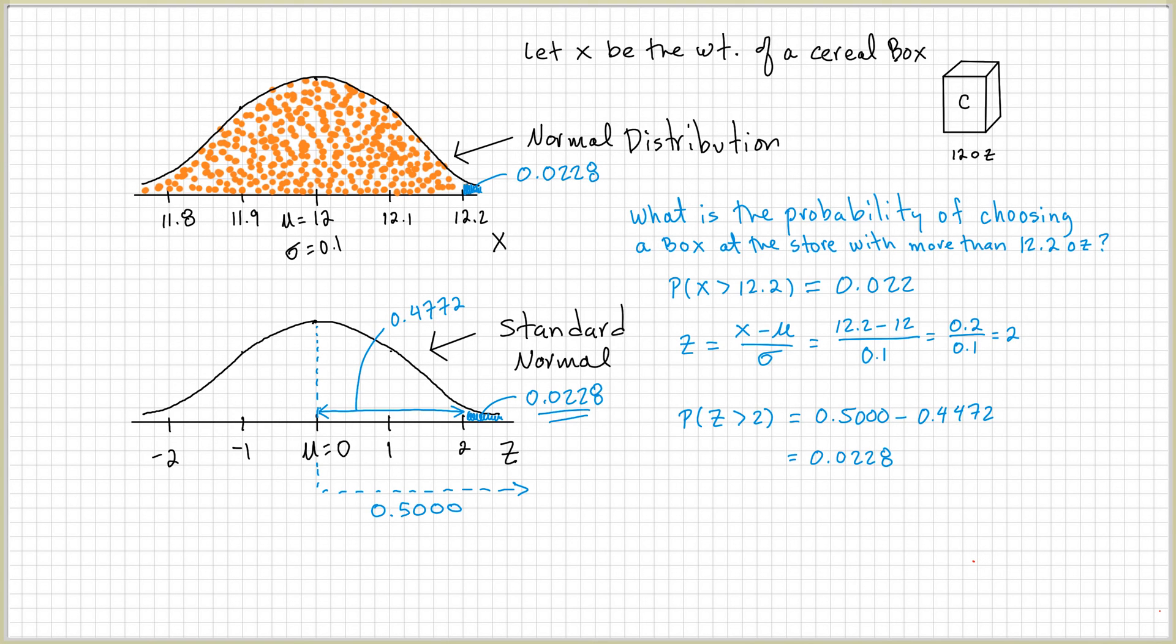And so, the answer for our problem is going to be the probability that you choose a box at random that has a weight of the content larger than 12.2. So, 12.2 would be approximately 0.0228. And if you want to write it out, there is a 0.0228 chance of choosing a box at random that is more than 12.2 ounces.